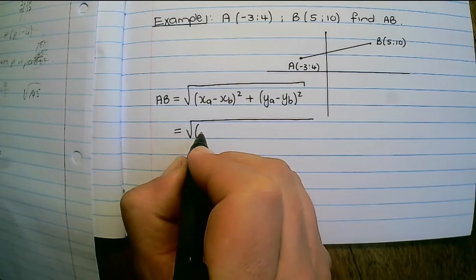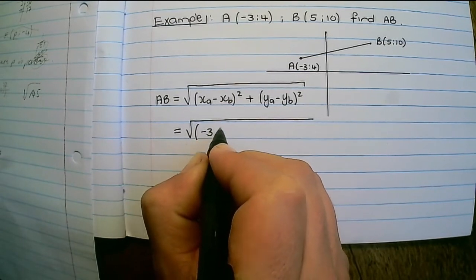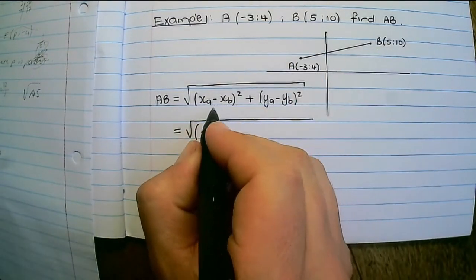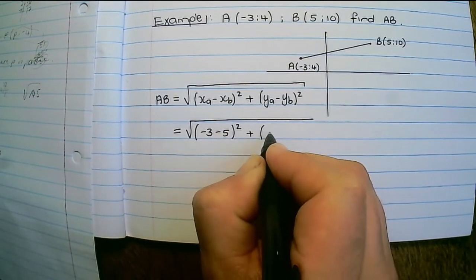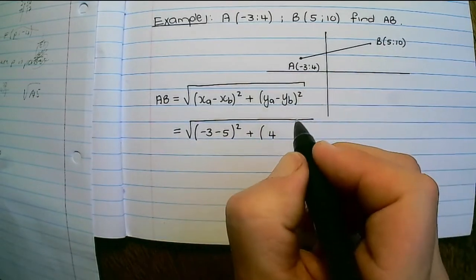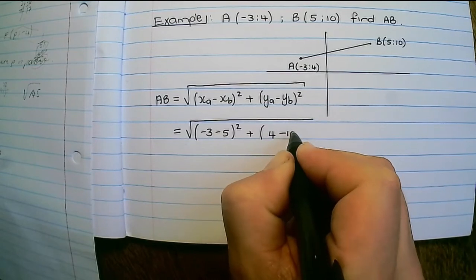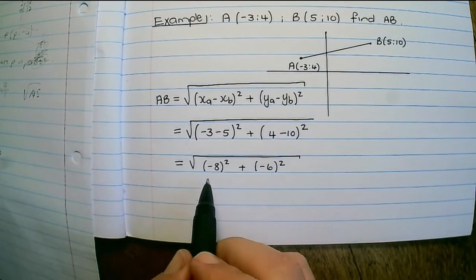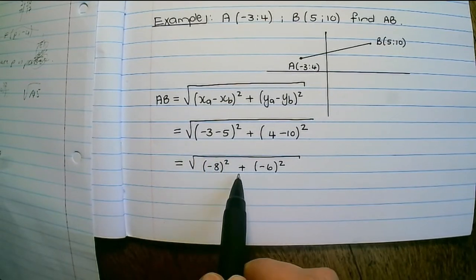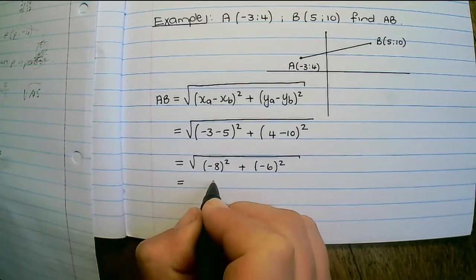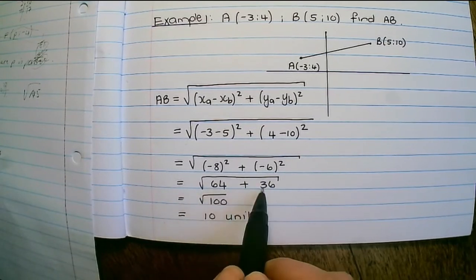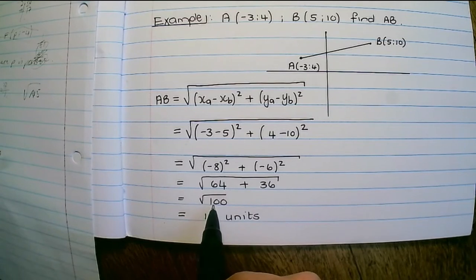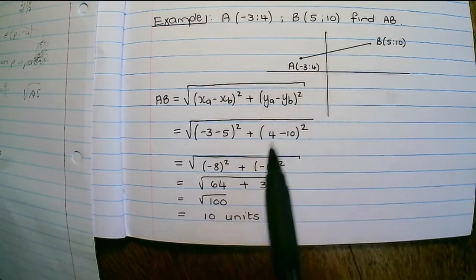So x_A is negative 3, and x_B is positive 5, so it's minus 5, close the bracket and square it. Plus y_A which is 4, minus y_B which is negative 10, squared. Simplifying inside each bracket: negative 8 squared plus negative 6 squared, which gives 64 plus 36 inside the square root. That becomes 100, and the square root of 100 is 10. So the distance between A and B is 10 units.